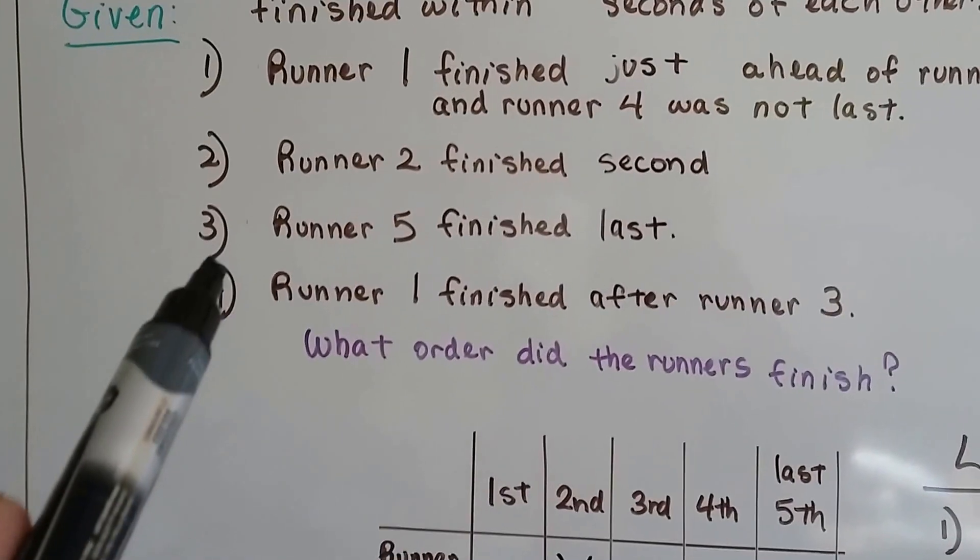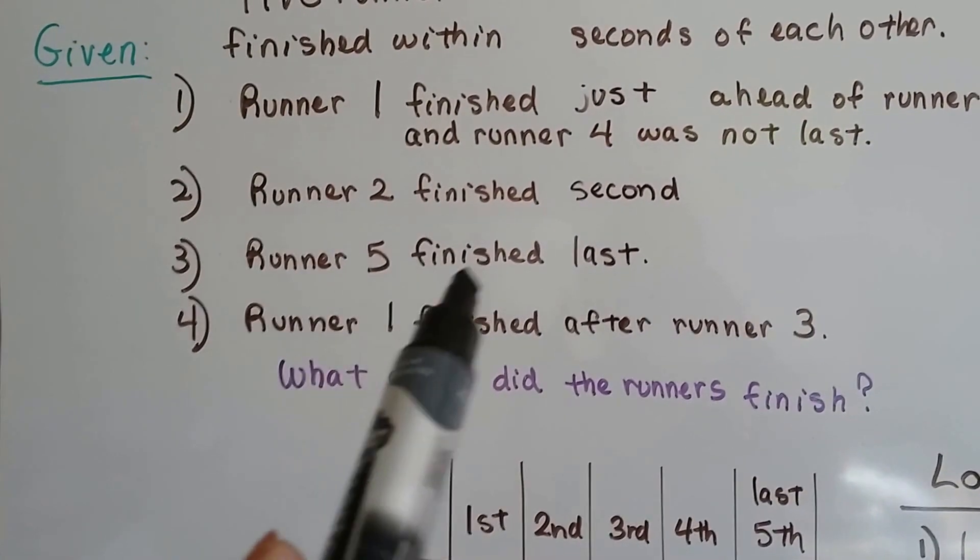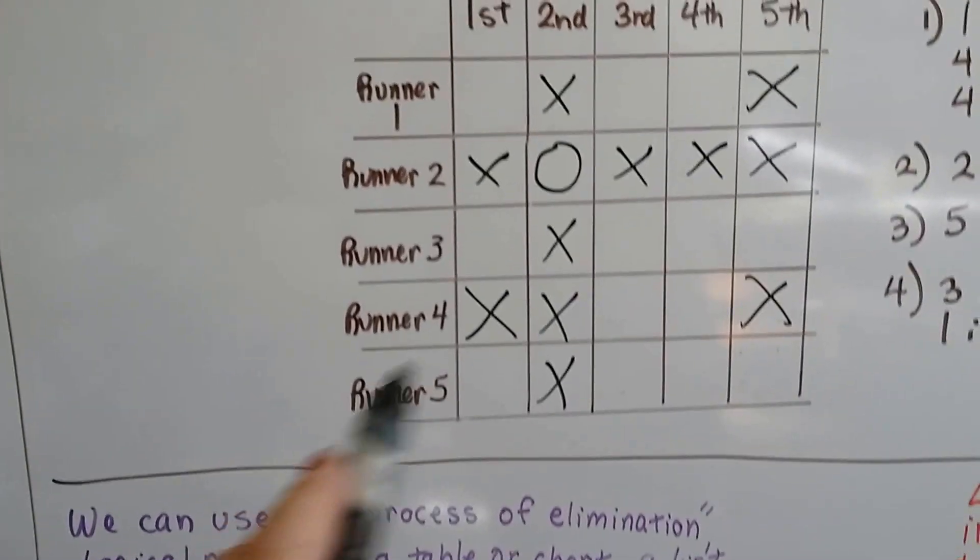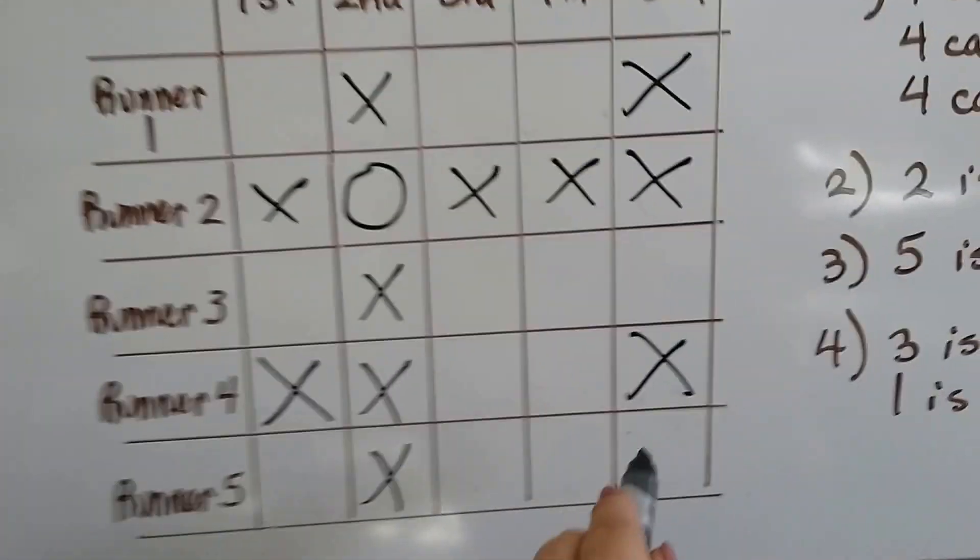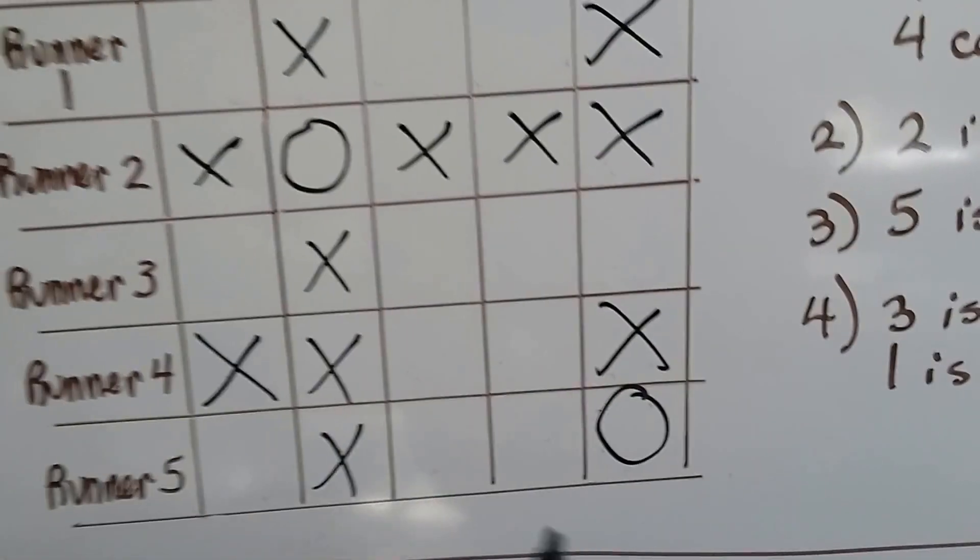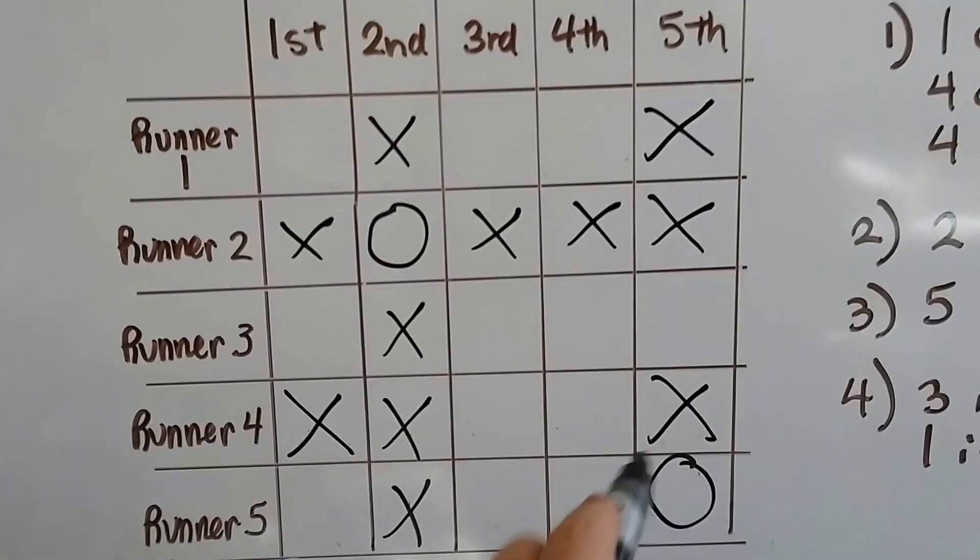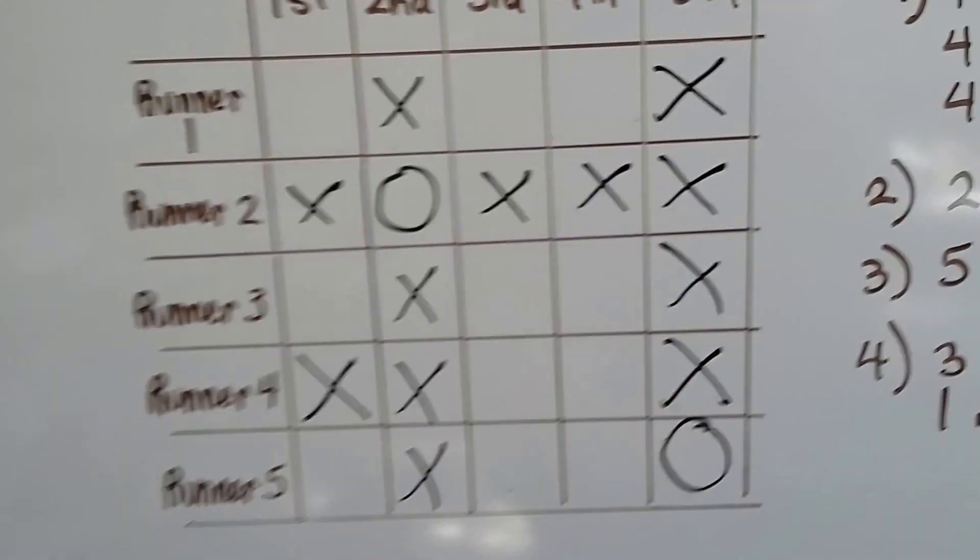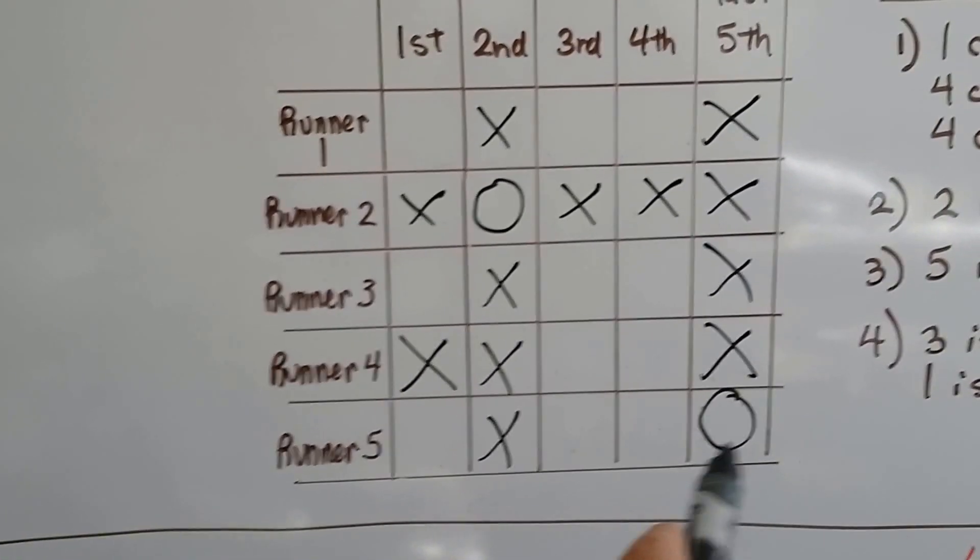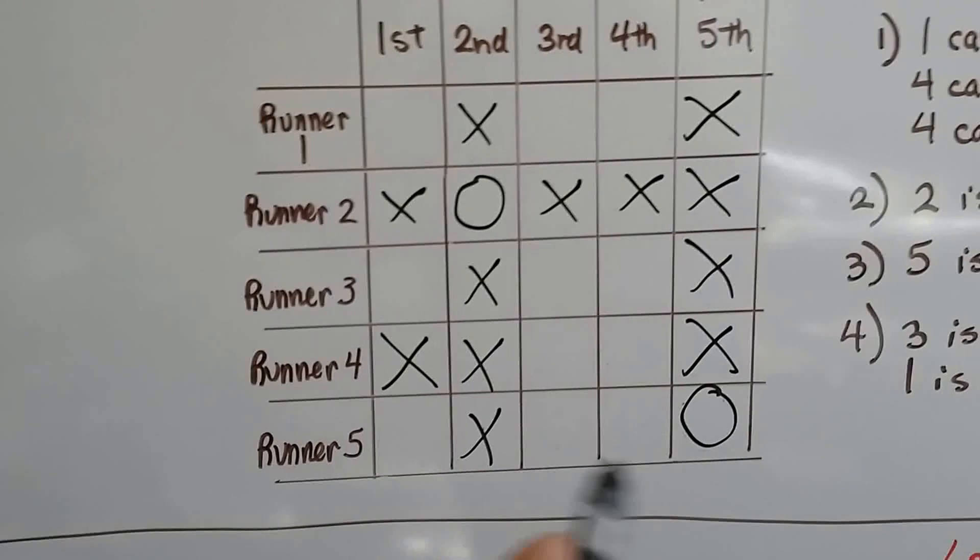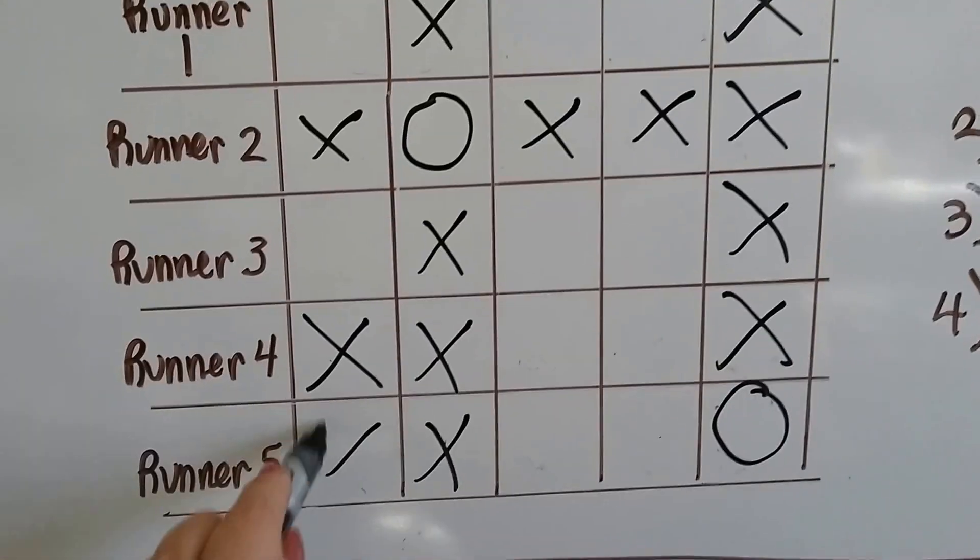If runner number two finished second, then runner one didn't finish second. Runner three didn't finish second or four or five. They didn't finish second. Runner two did. And if runner two finished second, he didn't finish first, third, fourth, or fifth. Our next clue is that runner number five finished last. So runner number five did finish last, so we're going to put a big circle here for him. And if he finished last, then runner three did not. We know five did. And if runner five finished last, then he didn't finish first, third, or fourth. So we can fill those in.